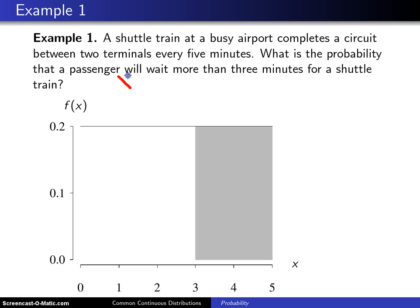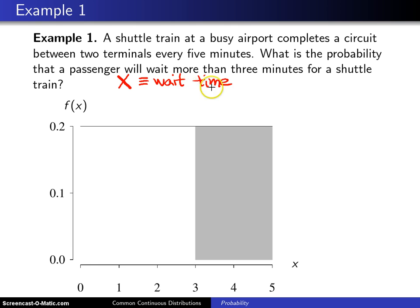In this case, the random variable X will represent the wait time of the passenger. The assumption going into this problem is that the wait time is uniformly distributed between zero and five.